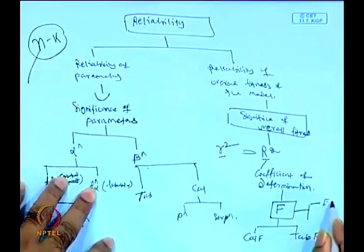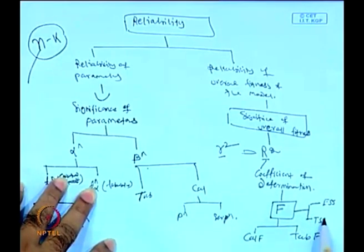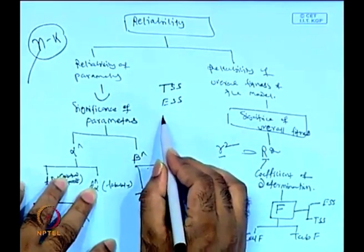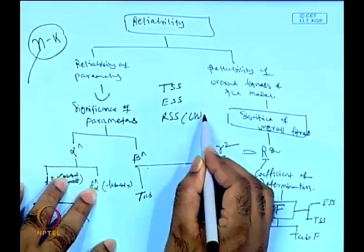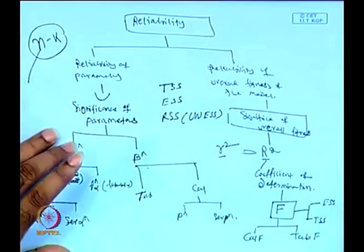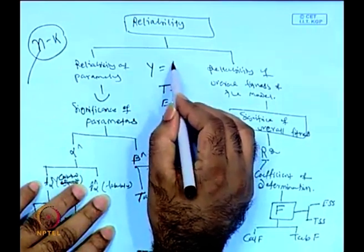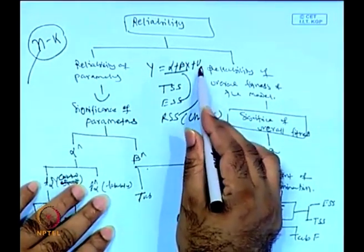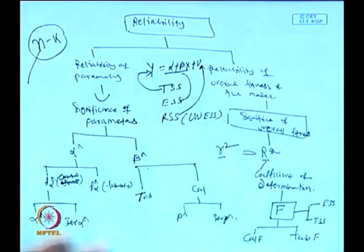For F-statistics, the table is different because it involves two different degree-of-freedom components: one for ESS (explained sum of squares) and one for TSS (total sum of squares). We have three standard items: TSS (total sum of squares), ESS (explained sum of squares), and RSS (residual/unexplained sum of squares). TSS relates to y, ESS to the explained part α + βx, and RSS to the error term u.